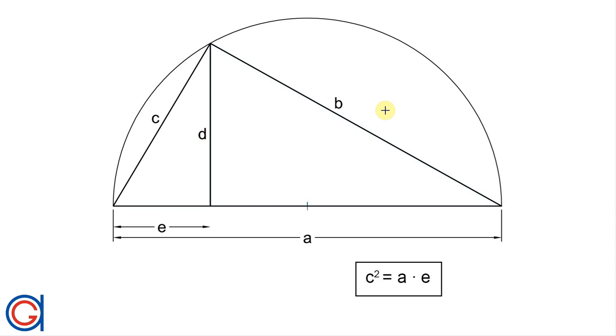If we draw the perpendicular height D, it divides the hypotenuse into two segments. The one which is adjacent to side C we will call E, and E is the perpendicular projection of the leg or the side C. The theorem states that C squared is equal to A times E. In other words, the leg geometric mean of A and E is C.